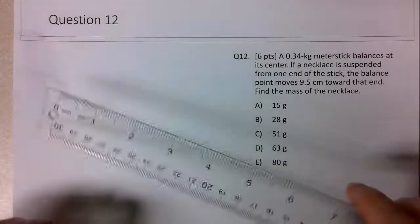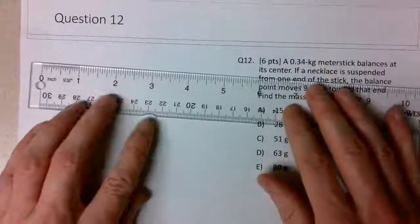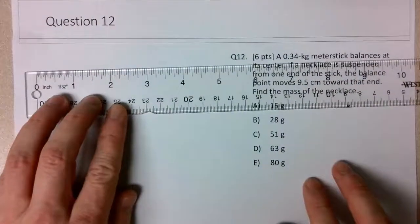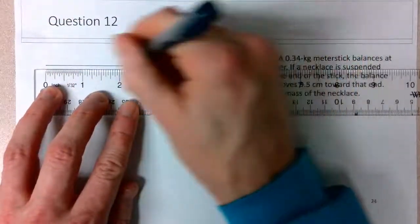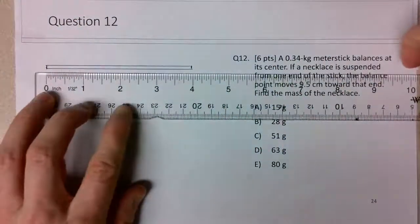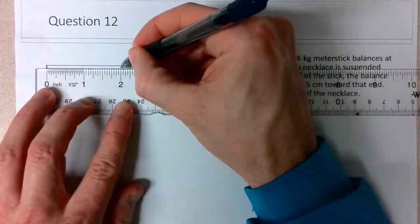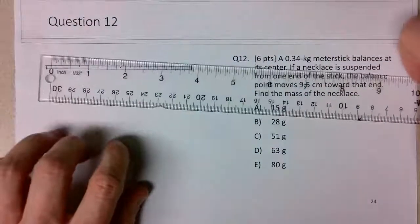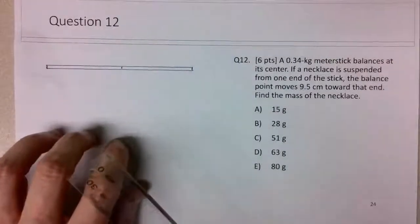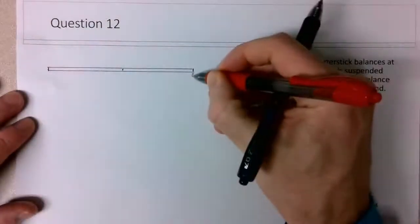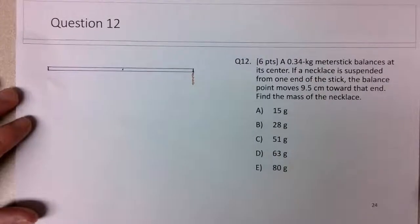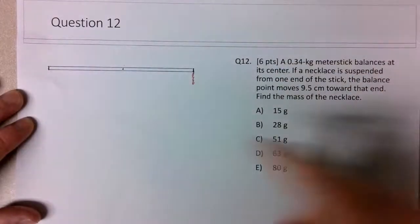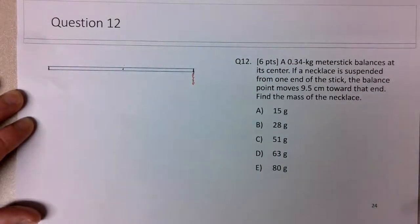So I'll start here with drawing a picture of the meter stick. Alright, and I'll just put the center point here, where it normally balances at the center. But we're told that when we hang a necklace from one end, the balance point moves closer to the necklace end by 9.5 centimeters.